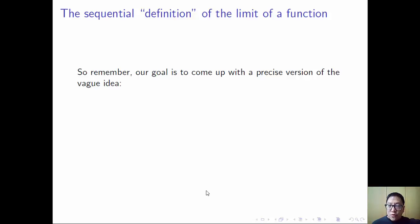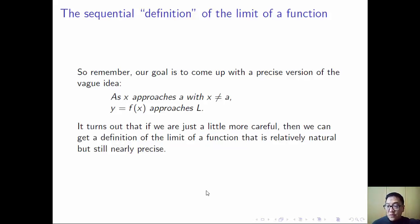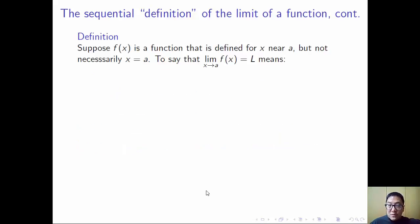Okay, so returning to the problem, remember our goal is to come up with a precise version of the vague idea that as x approaches a, f(x) approaches l. So it turns out if we're just a little bit more careful of that, we can get a definition of a function, the limit of a function, that is relatively natural, it's not too crazy, but still nearly precise.